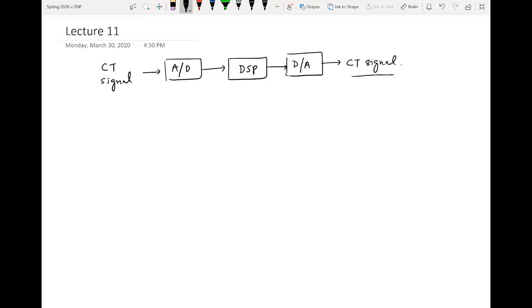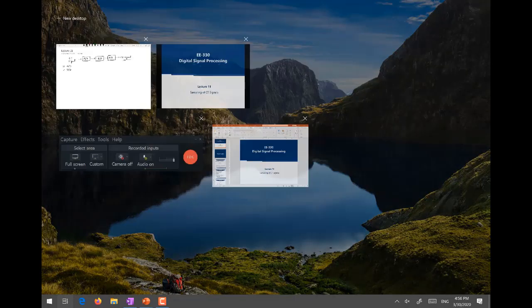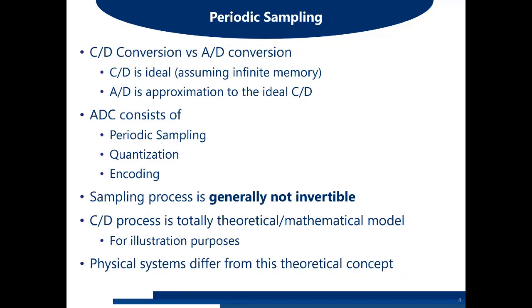There are many types of sampling techniques; the most famous is called periodic sampling. An important distinction is between two closely related concepts: C2D, which is continuous to discrete time conversion, and A2D, which is analog to digital conversion. C2D is ideal, assuming infinite memory — it discretizes only the time axis, not the amplitude (y-axis). A2D conversion is an approximation to the ideal C2D.